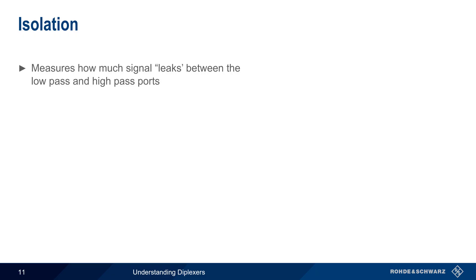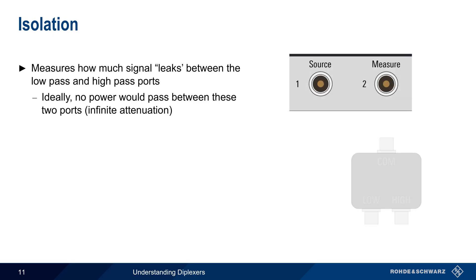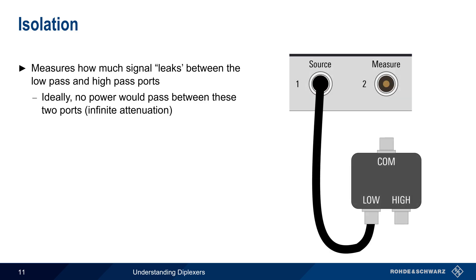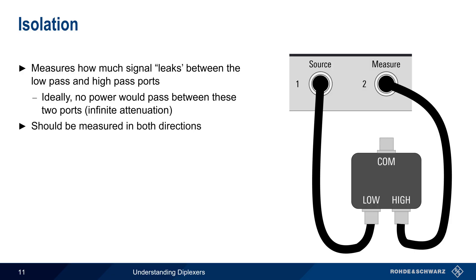Next we'll look at isolation, which measures how much signal leaks between the low side and the high side ports. Ideally, the amount of power coupled between these ports would be zero. Isolation is measured by sourcing power into either the high or low port, and then measuring the amount of power which appears at the other port. This measurement should be made in both directions, that is both S21 and S12 measurements, although the results tend to be very similar.